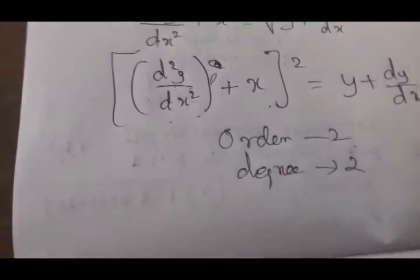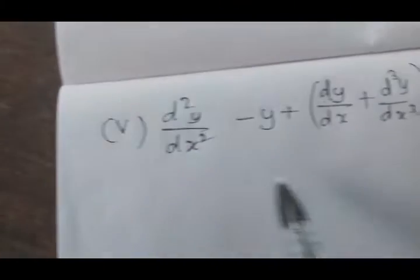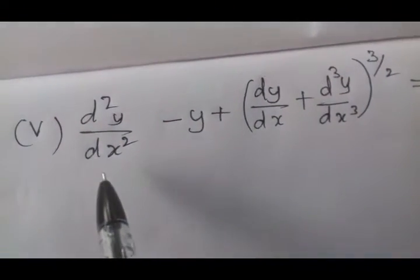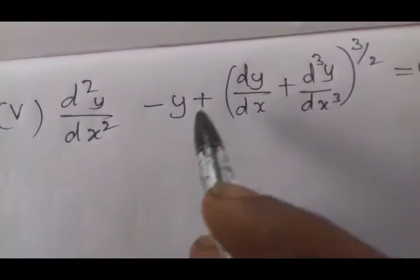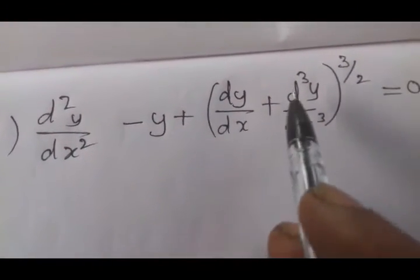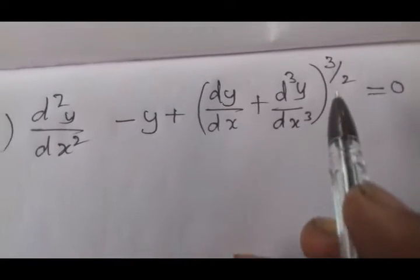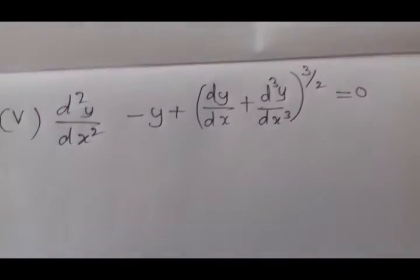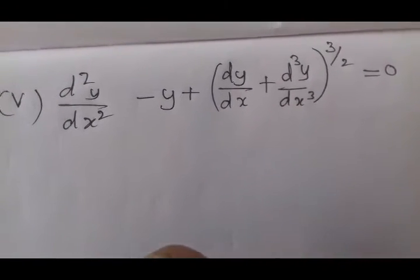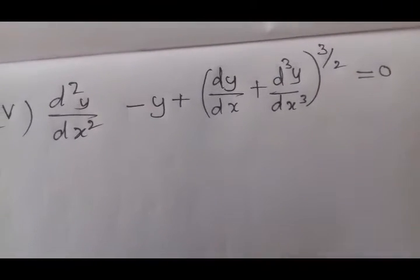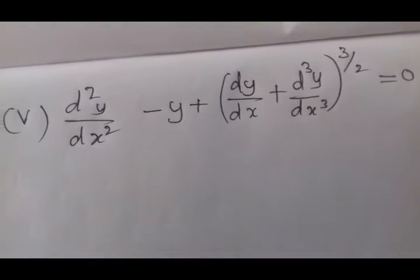At the fifth division problem: d²y/dx² + dy/dx + (d³y/dx³) whole power 3/2. The fractional power 3/2 needs to be removed.